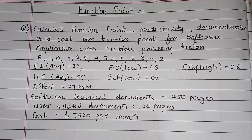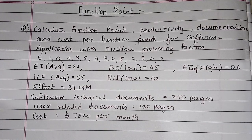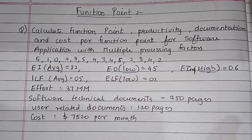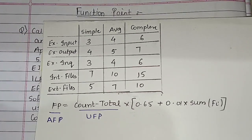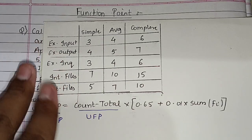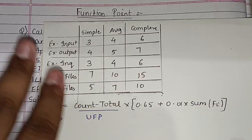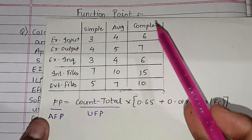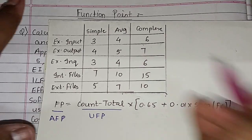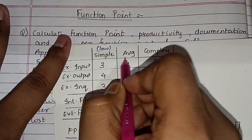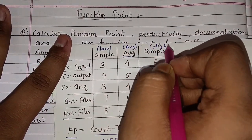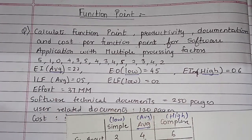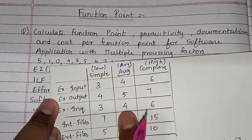Before starting to solve the function point numerical, we have to remember the values from this table. You can see average, low, and high. For external input: simple (low) multiply by 3, average multiply by 4, complex (high) multiply by 6. Simple is the same as low, average is average, and complex is high.